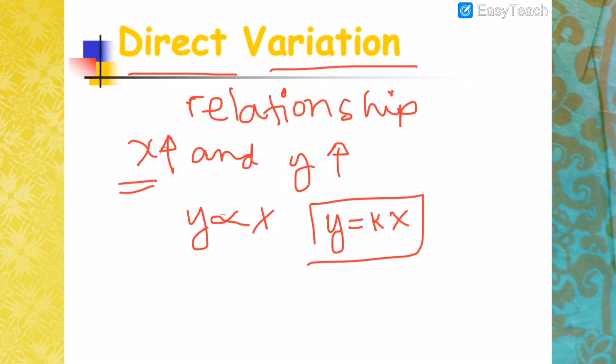So some books would also use the word varies directly as X. Directly to X.